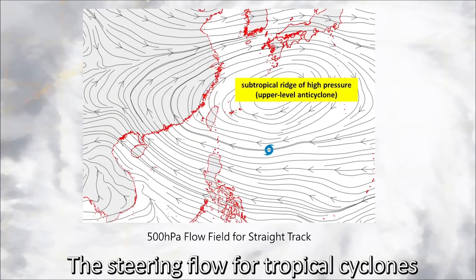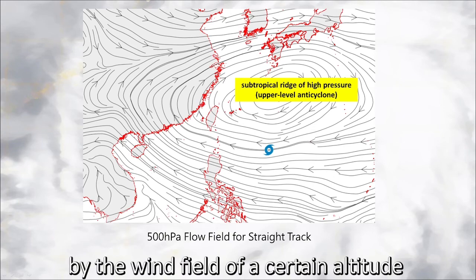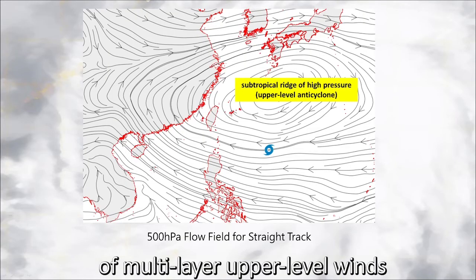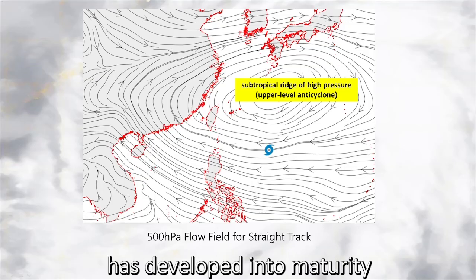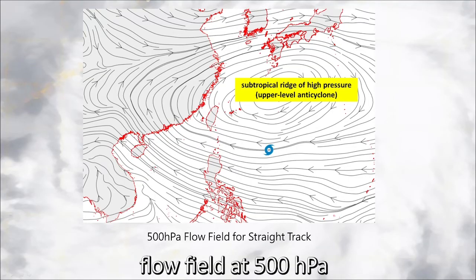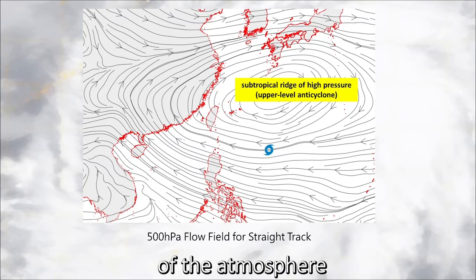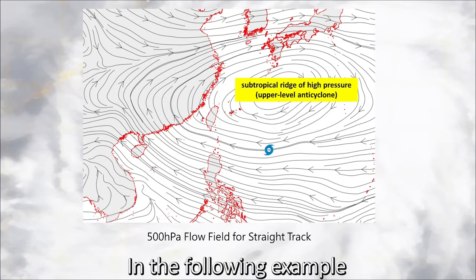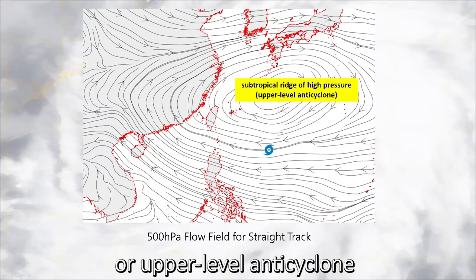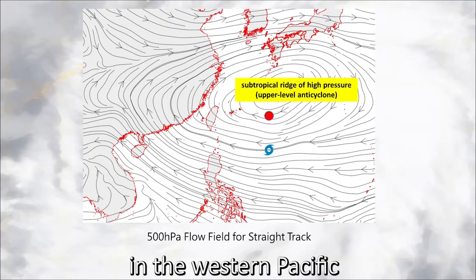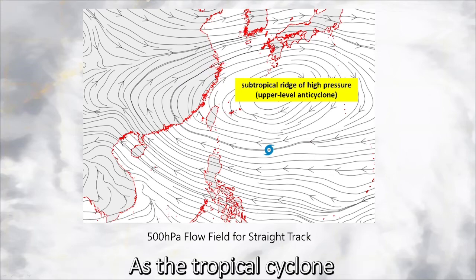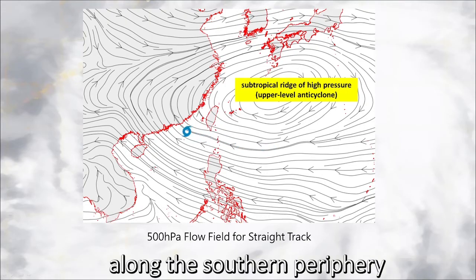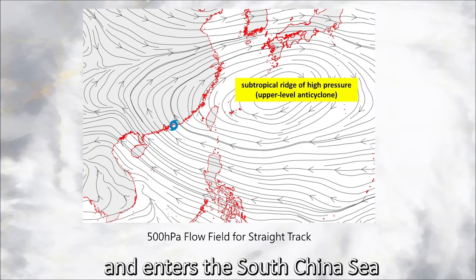The steering flow for tropical cyclones can generally be represented by the wind field of a certain altitude or the averaged wind field of multi-layer upper-level winds. If a tropical cyclone has developed into maturity, we can simply use the flow field at 500 hectopascals, which is the mid-level point of the atmosphere, or 5,000 to 6,000 meters above ground. In the following example, the subtropical ridge of high pressure, or upper-level anti-cyclones, in the western Pacific extends westwards to southern China. As the tropical cyclone is dominated by its steering flow, it keeps moving west-northwestward along the southern periphery of the subtropical ridge and enters the South China Sea.